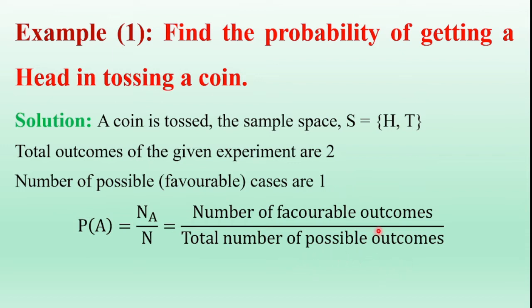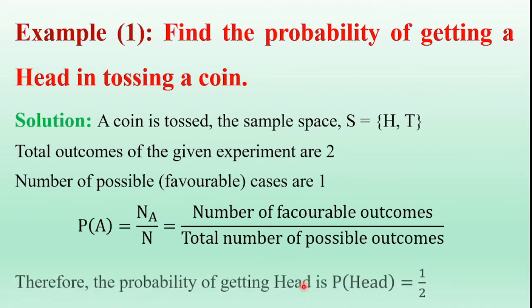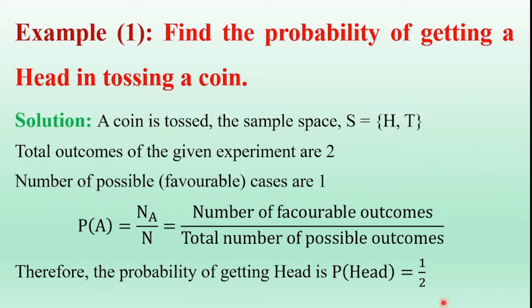Now here, we want to calculate the probability of getting a head. Tossing a single coin, head occurs only one time. So the number of favorable outcomes are one, and the total number of possible outcomes are two. Therefore, the probability of getting a head is one by two.